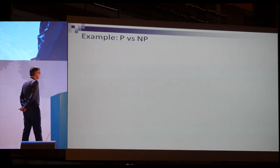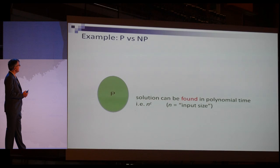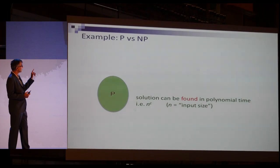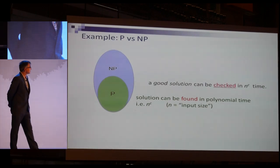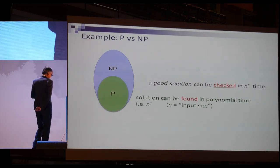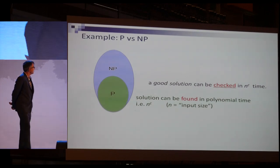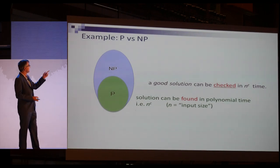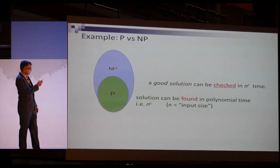What are these famous conjectures? One most of you must have heard about is P versus NP. P is a class of problems where the solution can be found in polynomial time — time that runs as n to the c for a fixed constant c and input size n. NP is a set of problems where a good solution can be checked in polynomial time. Informally, you can think of this as the difference between coming up with a mathematical proof and verifying one — NP corresponds to verifying the proof.